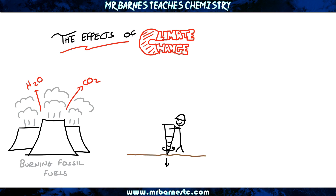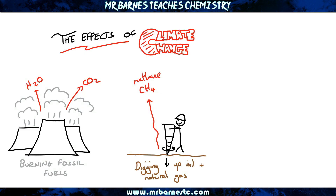The second method is the extraction — the digging up of oil and natural gas. When they're dug up, methane is produced or escapes from the ground. Methane is a much, much larger greenhouse gas than carbon dioxide and water vapour; it absorbs a lot more infrared heat.